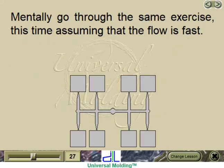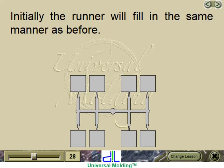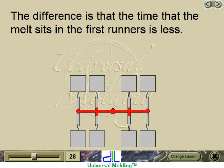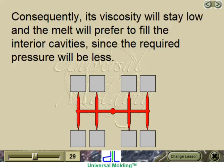Mentally go through the same exercise, this time assuming that the flow is fast. Initially, the runner will fill in the same manner as before. The difference is that the time the melt sits in the first runners is less. Consequently, its viscosity will stay low and the melt will prefer to fill the interior cavities, since the required pressure will be less.